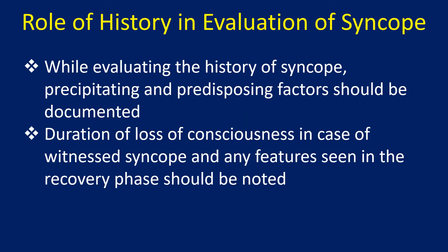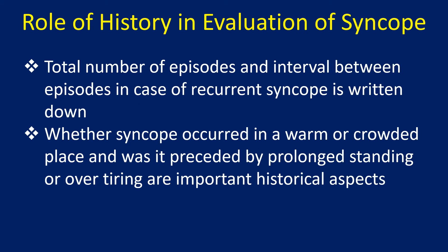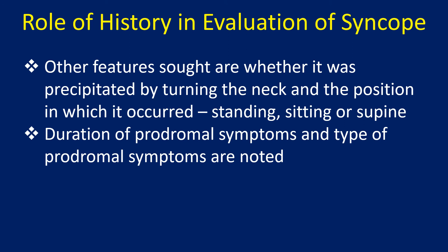While evaluating the history of syncope, precipitating and predisposing factors should be documented. Duration of loss of consciousness in case of witnessed syncope, and any features seen in the recovery phase should be noted. Total number of episodes and interval between episodes in case of recurrent syncope is written down. Whether syncope occurred in a warm or crowded place, and whether it was preceded by prolonged standing or overtiring are important historical aspects. Other features sought are whether it was precipitated by turning the neck, and the position in which it occurred — standing, sitting, or supine.